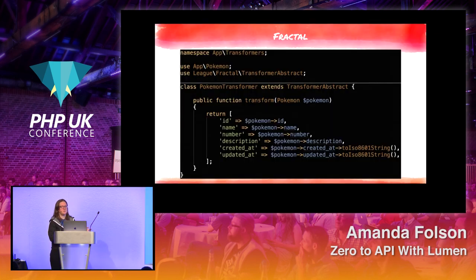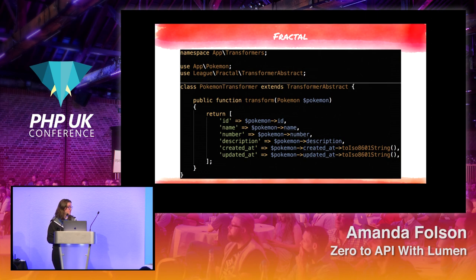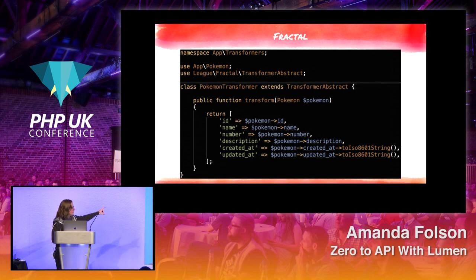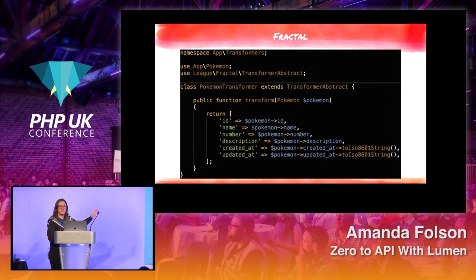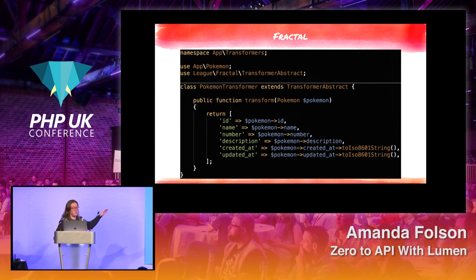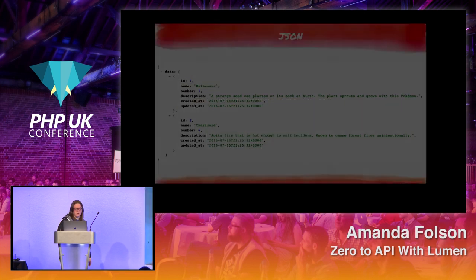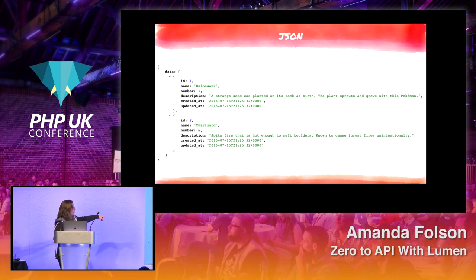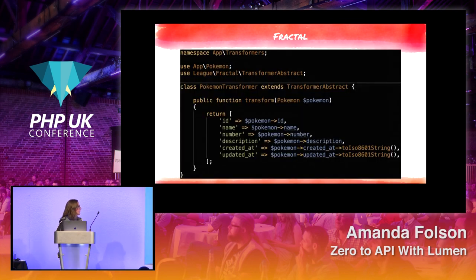We can import a library called Fractal, made by Phil Sturgeon and put out by the PHP League, which helps provide a consistent interface for presenting this JSON output. This code is called a transformer — it transforms data from our database into something easily consumable. You can see how we'll always return things in a particular order: ID, name, number, description, and timestamps, always in the same exact order.